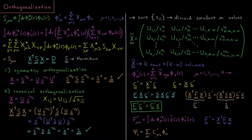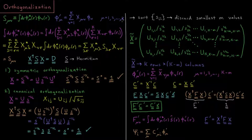This video will discuss orthogonalization, or how we go about finding an orthonormal basis set in the Hartree-Fock equations. Let's start off by reminding ourselves that the overlap matrix between pairs of basis functions is S_mu_nu, its element S_mu_nu being the integral over all space of phi_mu* phi_nu, where a particular phi is one basis function in a basis set where we have basis functions going from 1 to K. Some linear combination of those represents our individual molecular orbitals in Hartree-Fock.